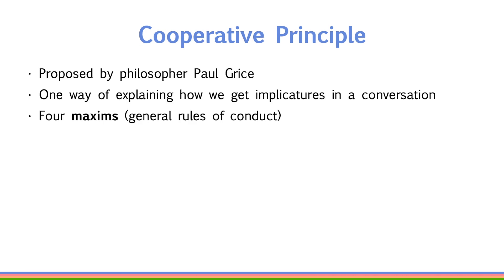This way of analyzing how implicatures arise in discourse is called the cooperative principle, proposed by philosopher Paul Grice. He proposed that one way of explaining how we get implicatures in a conversation is to think that there are implicit conversational principles that discourse participants follow. According to the cooperative principle, the major underlying assumption we make in a conversation is that all discourse participants are acting in a way to accomplish conversational goals. For example, if the topic of discussion was how much money should we spend on our cat's birthday party, and everyone agrees that the goal is to figure out a reasonable cost, then all discourse participants assume that everyone is acting in a reasonable way to accomplish this goal. This is what's meant by cooperation in the cooperative principle.